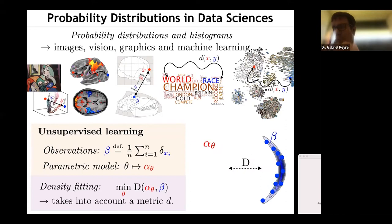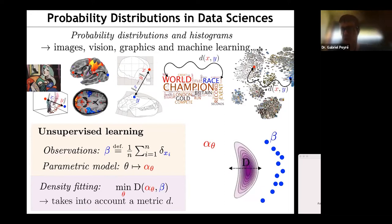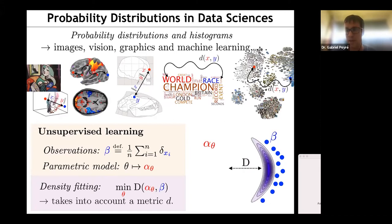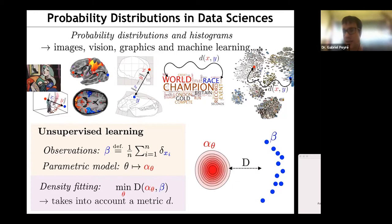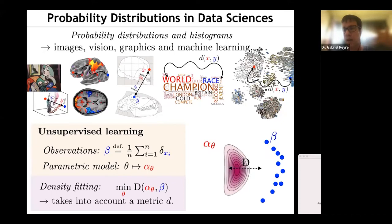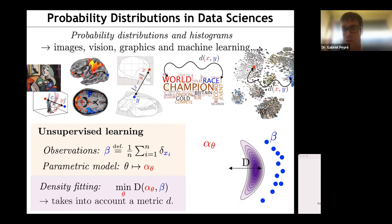Think of optimal transport as a lifting mechanism: you give me some metric little d, and I give you the output capital D. Of course, the difficulty — no free lunch — is that this computation involves solving an optimization problem, so it costs in terms of computation. In terms of statistics, there are questions about how many points you need — 10, 100, 1 billion — to robustly estimate these distances. There are two types of scalability issues: computational scalability, and statistical scalability in high dimensions.